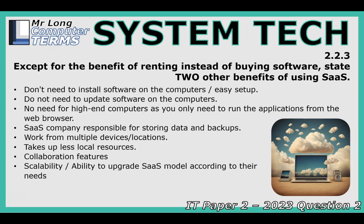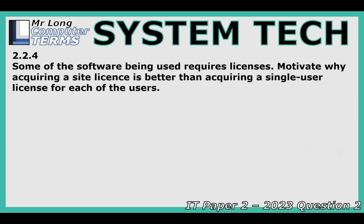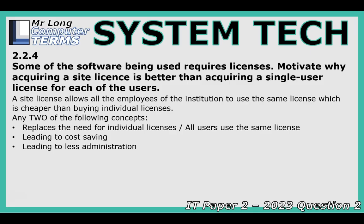Regarding licensing, a site license lets everyone in the organization use the software under one agreement, instead of juggling hundreds of individual keys. It's much less administrative hassle and usually cheaper per user than buying individual licenses for everyone — just more efficient for an organization.